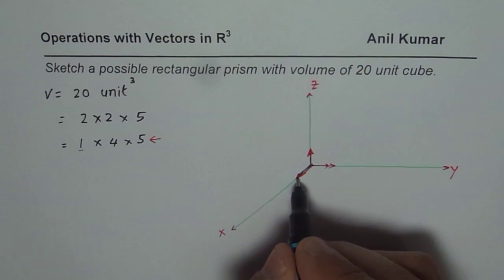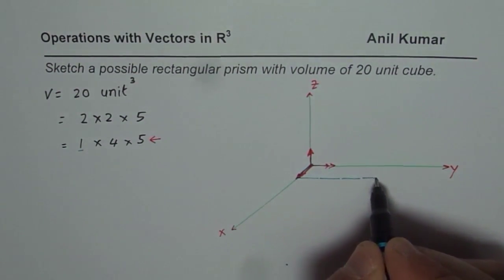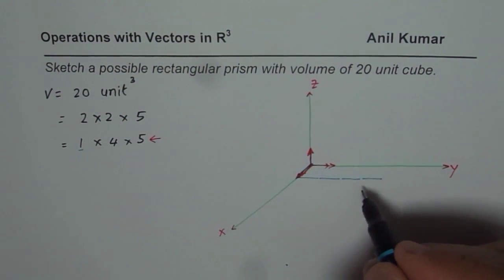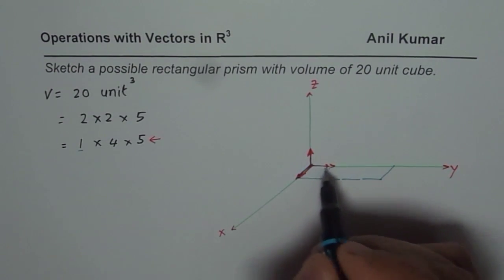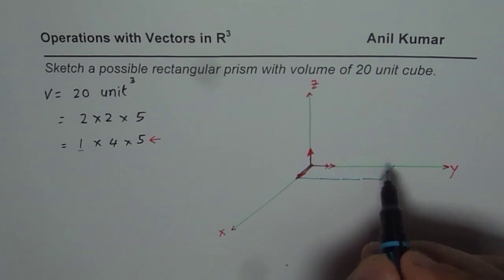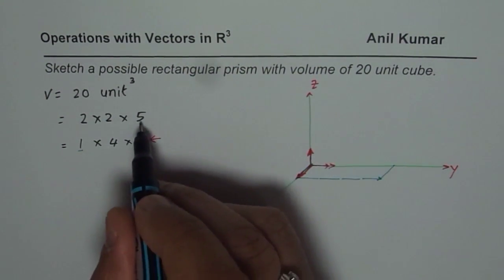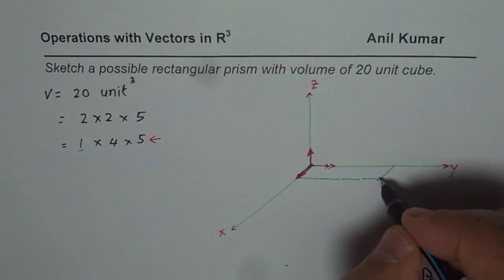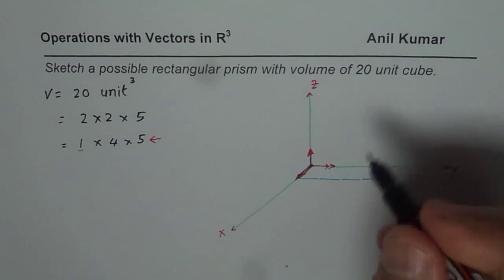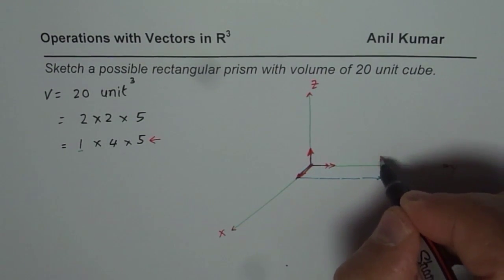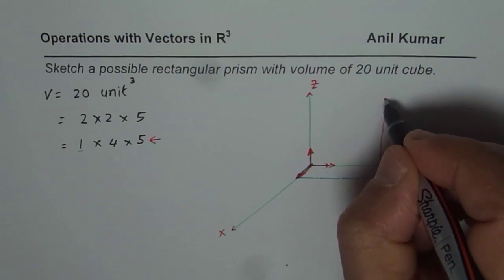The y-component is 4, so I'll go four units in that direction: one, two, three, four. If I complete the base it looks like this — that is the base of my rectangular prism. Now to complete it I have to go five units upward from this point, so let's go: one, two, three, four, five units.